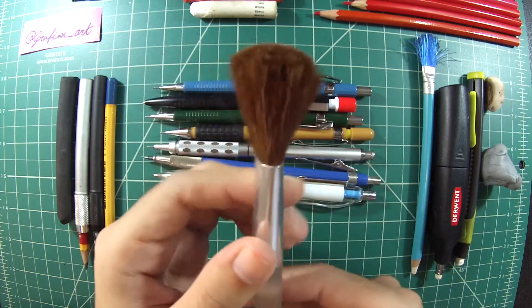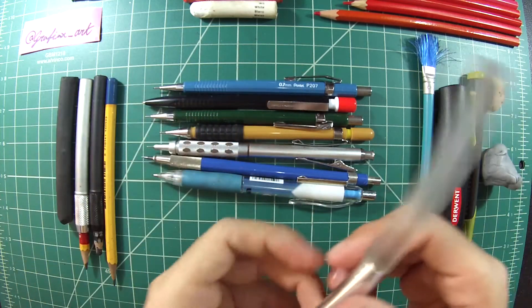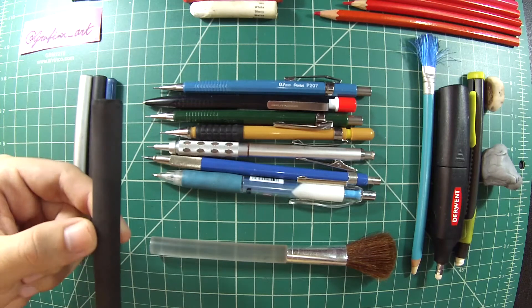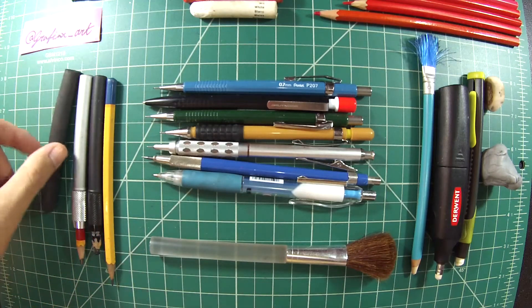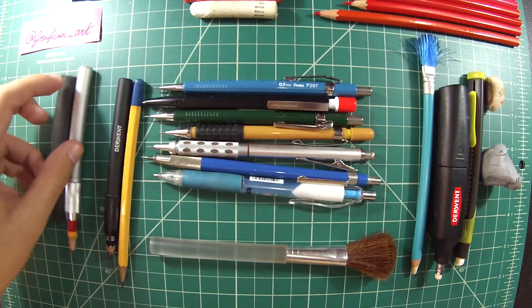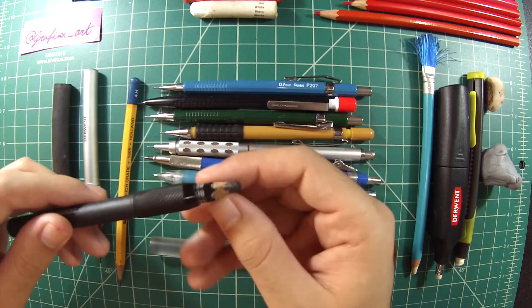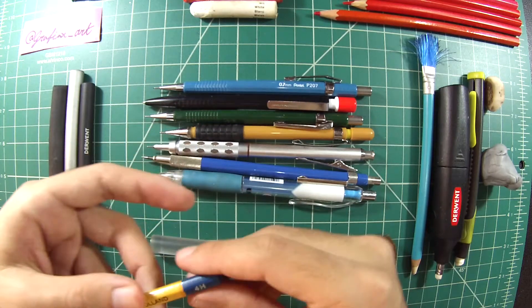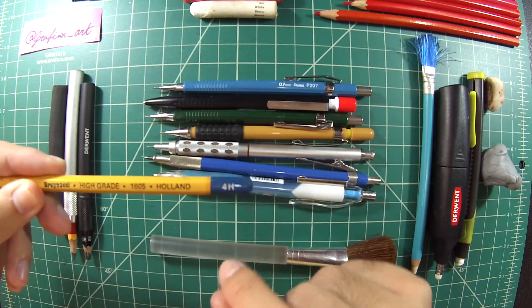Here you have a brush. I got this from my girlfriend. She uses this for her makeup. I have charcoal, my other 6B pencil, then we have my 8B pencil, and my 4H pencil.